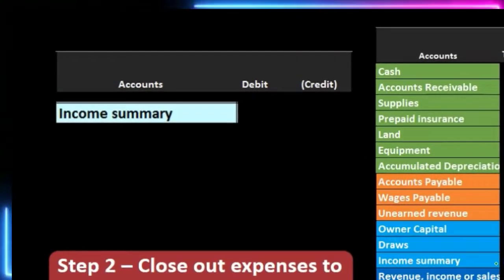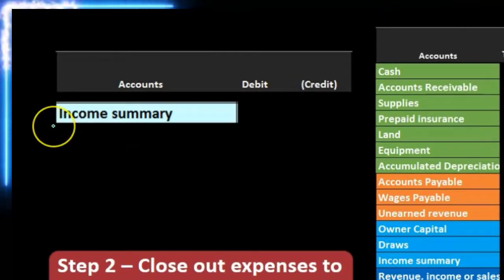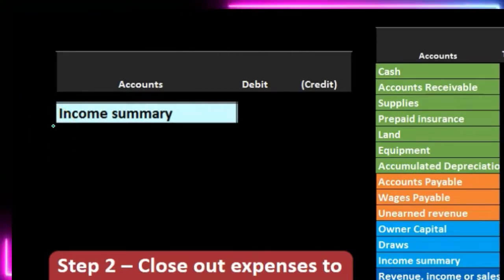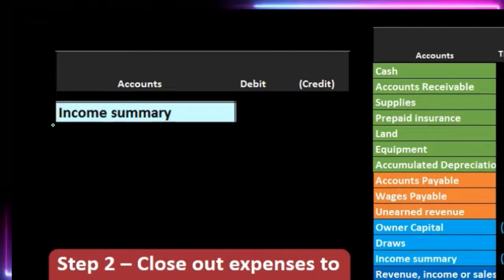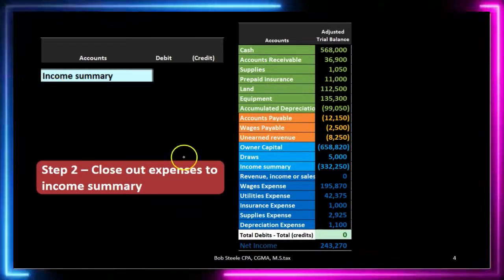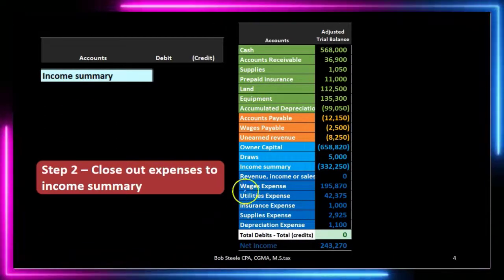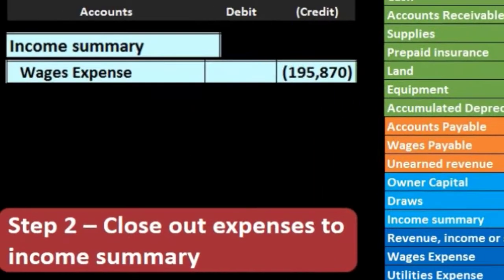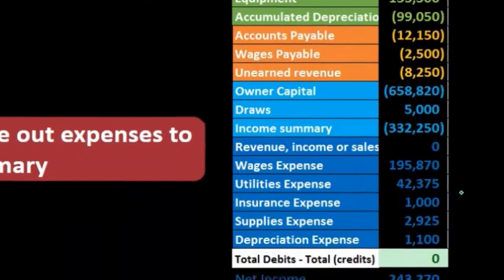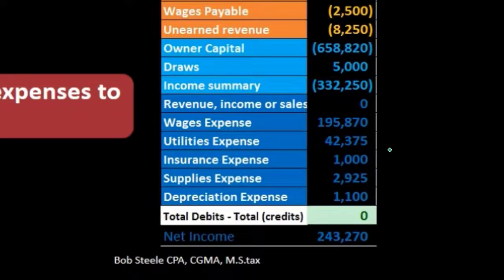We don't know the income summary amount yet, so I'll list all the expenses as credits first, then figure out what the income summary debit should be to make debits equal credits. Starting with wages: we're going to credit wages expense for 195,870. If we post that out, we're going to credit that account, making it go to zero. That was the goal — that's the objective.